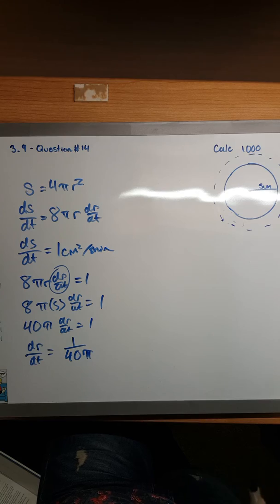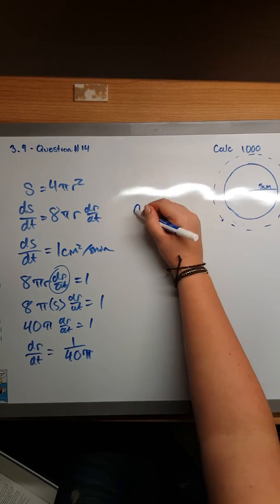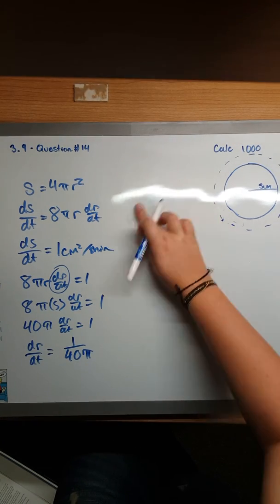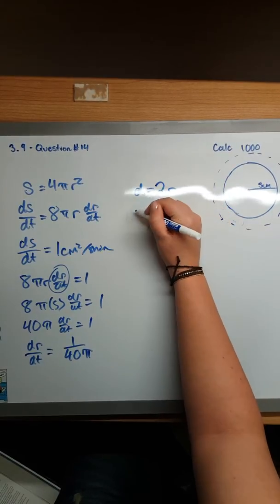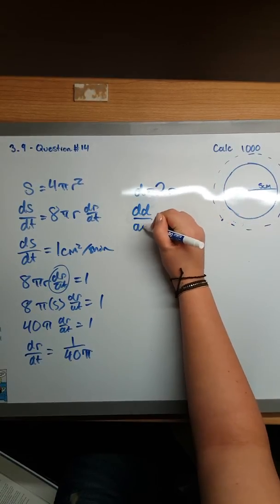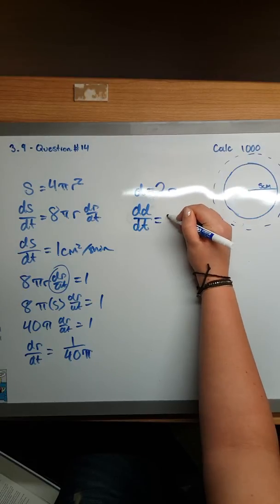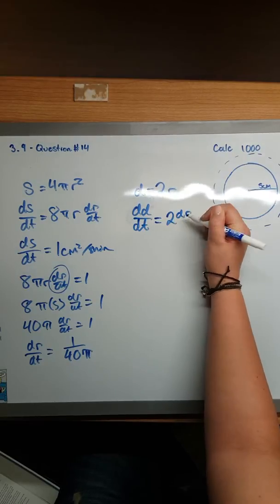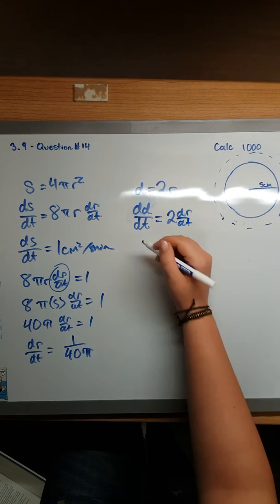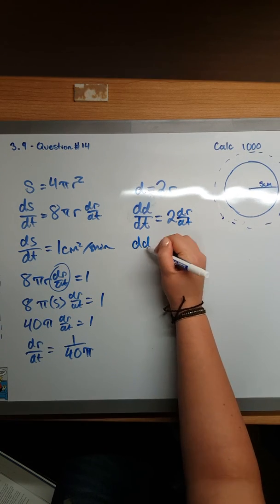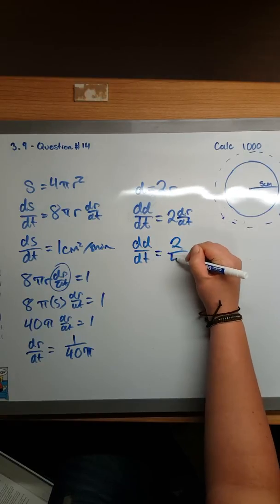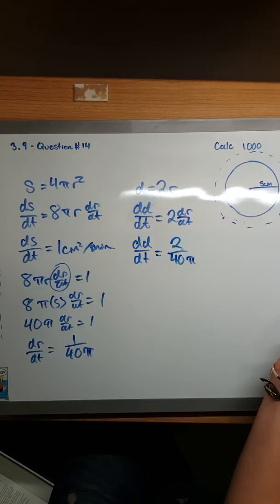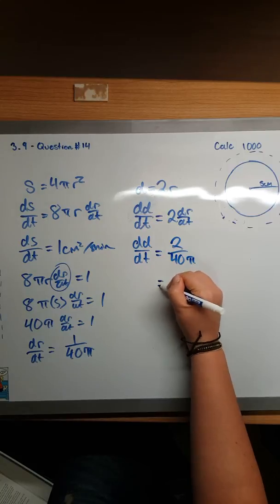But the question asks for the rate of change for the diameter. So the diameter is equal to 2 times the radius, so dD/dt equals 2(dr/dt). This is dr/dt, so dD/dt equals 2 over 40π.